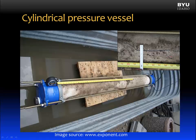Here is a segment of a water main that was dug up from below the ground after being in operation for a few decades. End caps were put on each end, and the pipe was filled with water and pressurized until the pipe failed. You can see the crack in the pipe — it's a longitudinal crack, in the direction of the longitudinal axis of the pipe. There's something important about the direction of the crack, and we will talk about that as we go along.